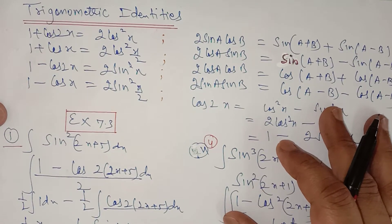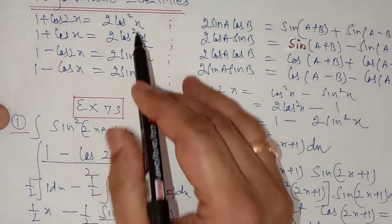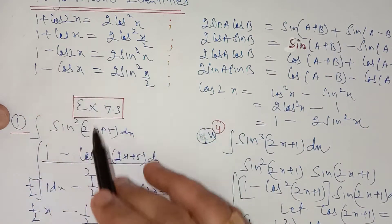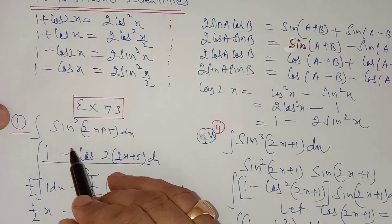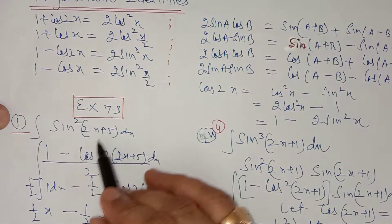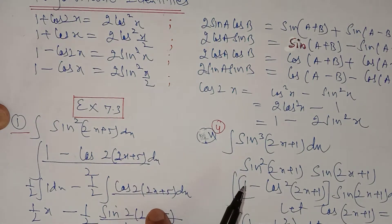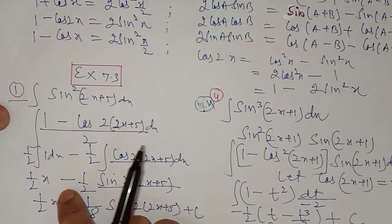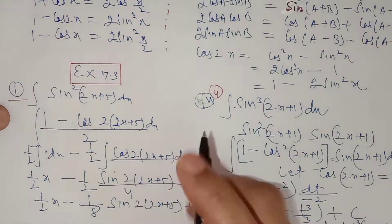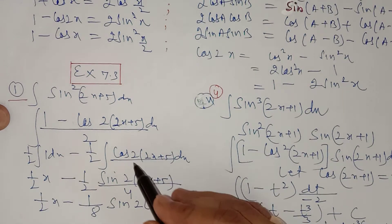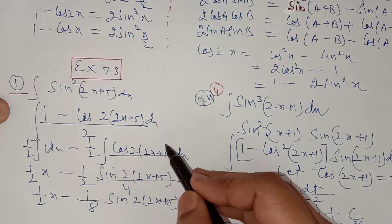You have to use these identities in this exercise. In question number 1, it is sin²(2x+1), so you use the identity sin²x = (1 - cos 2x)/2 to eliminate the square. Whenever you integrate sin²x, write (1 - cos 2x)/2, then break into two integrations: the integral of 1/2 and the integral of (1/2)cos(2(2x+5)). The integral of 1 is x, and the integral of cos(2(2x+5)) is sin(2(2x+5)) divided by the derivative of (2(2x+5)), which equals 4.